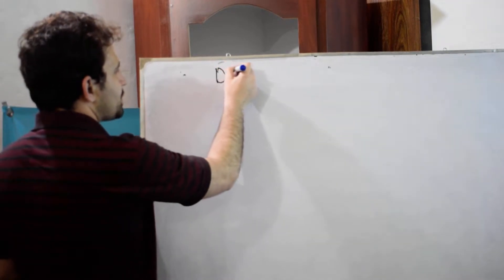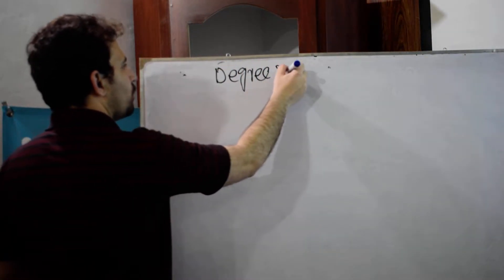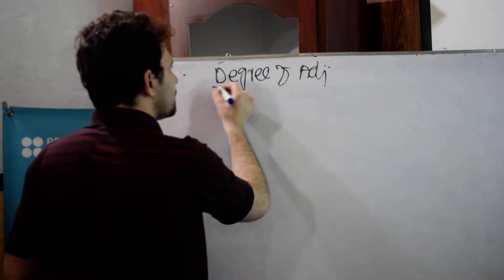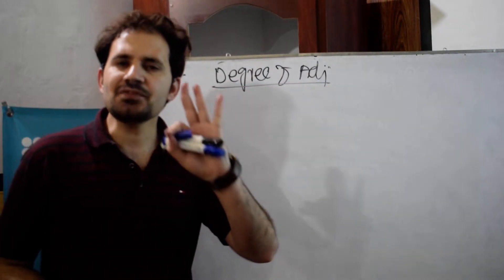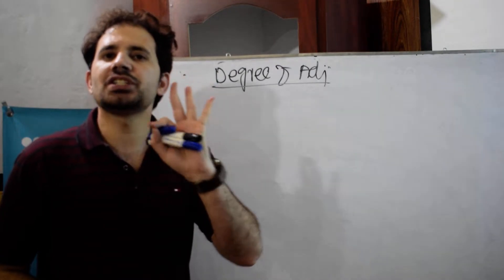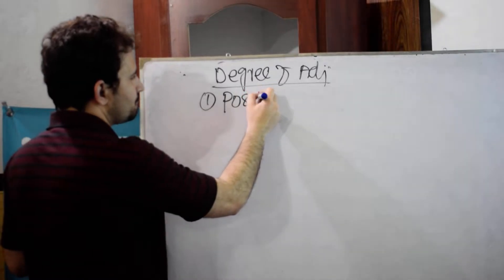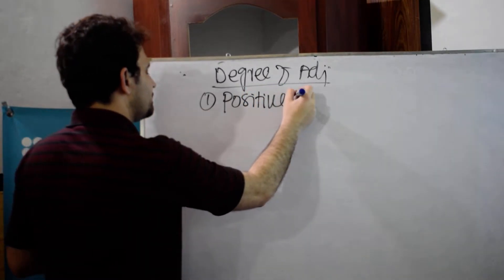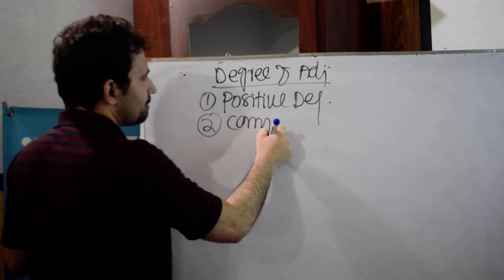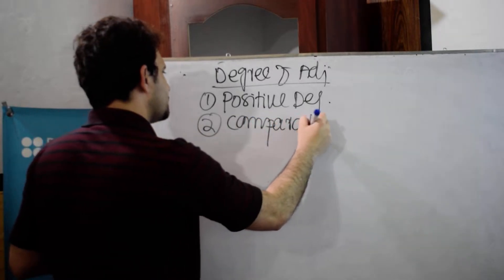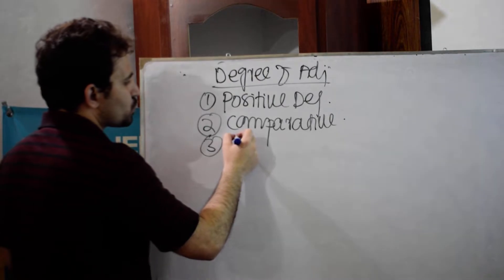Today we talk about the degrees of adjectives. Adjectives have three degrees: number one is called positive degree, number two is called comparative, and the third one we call superlative.